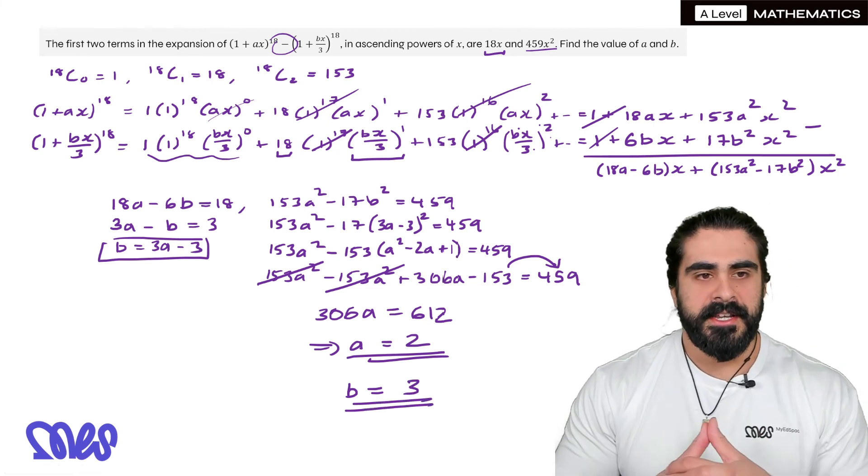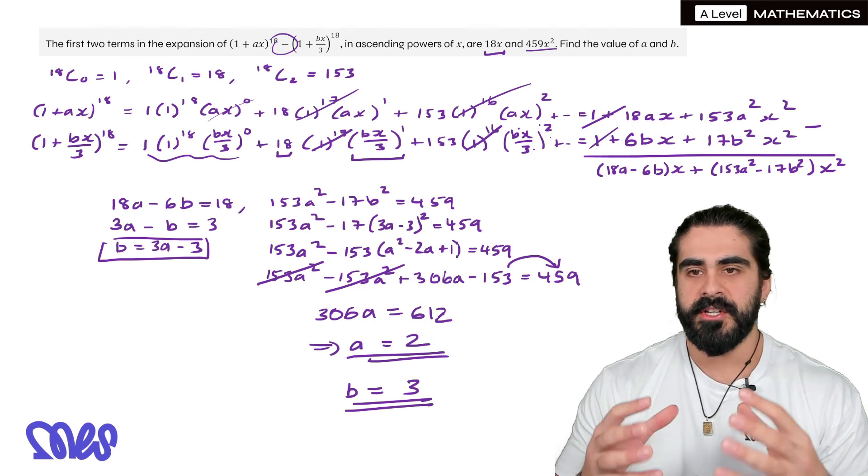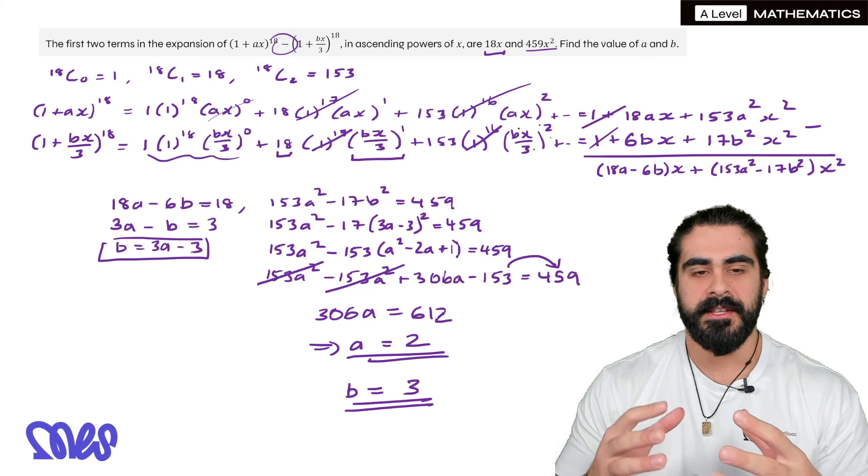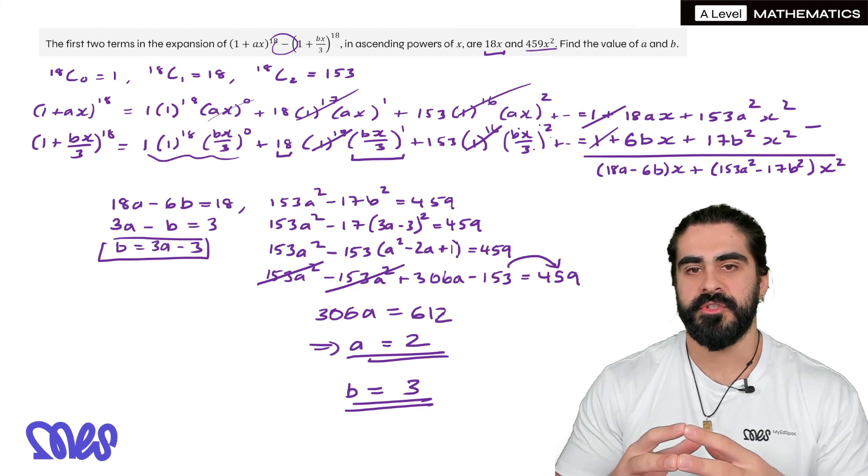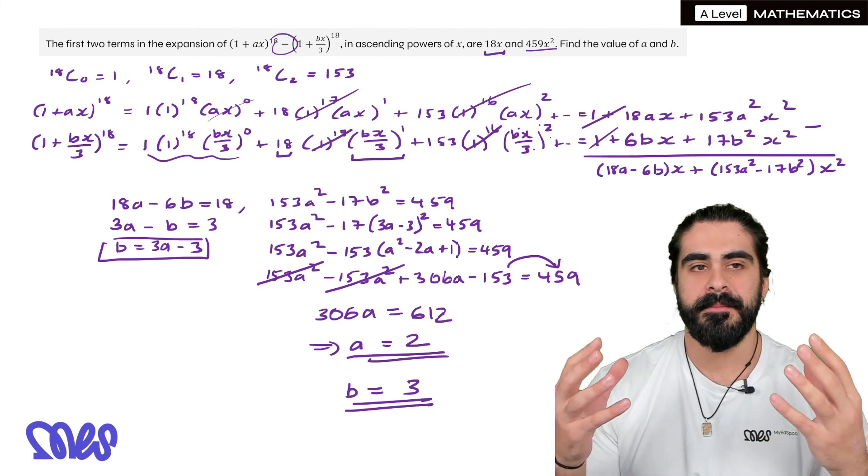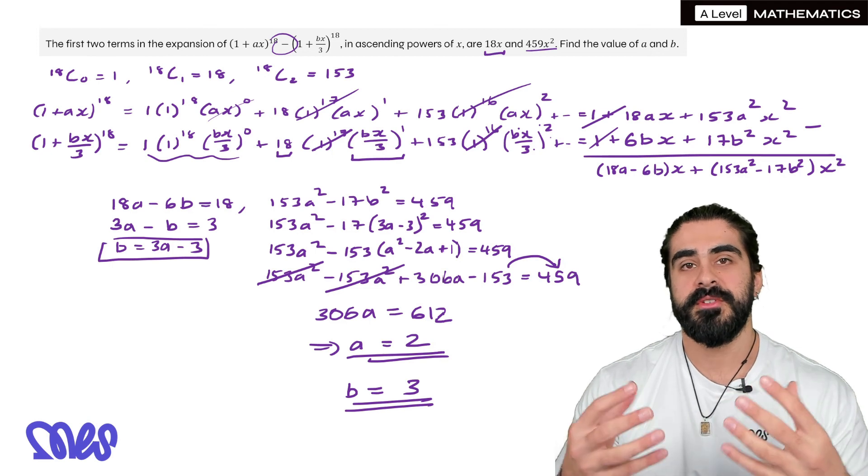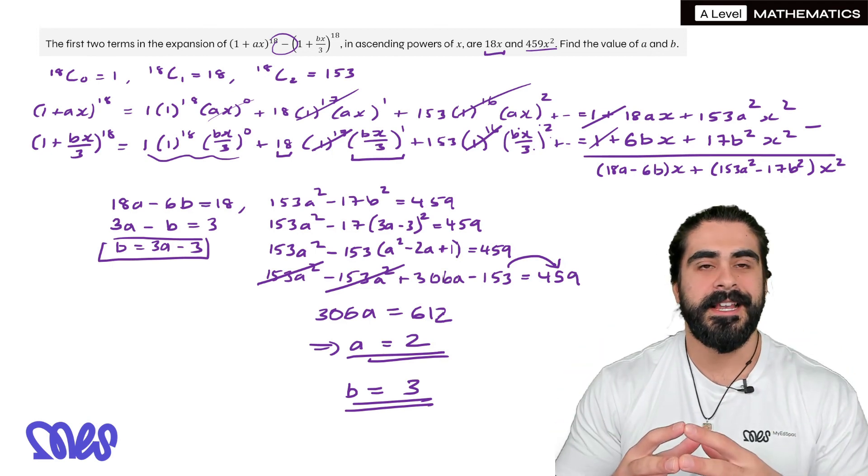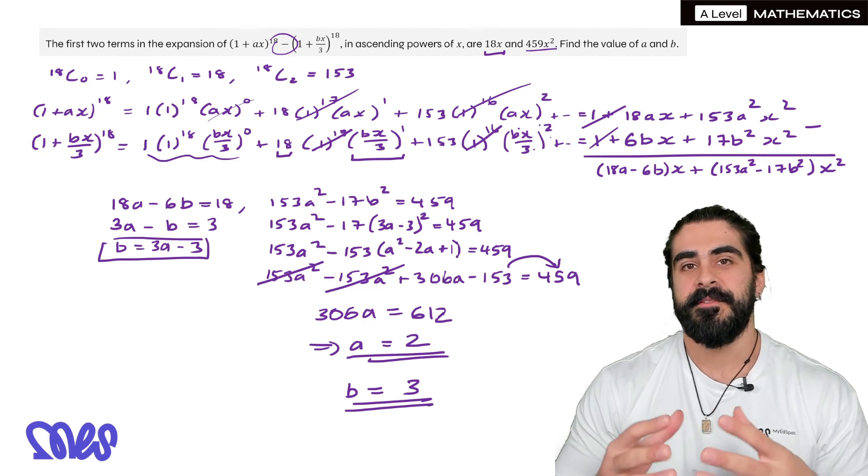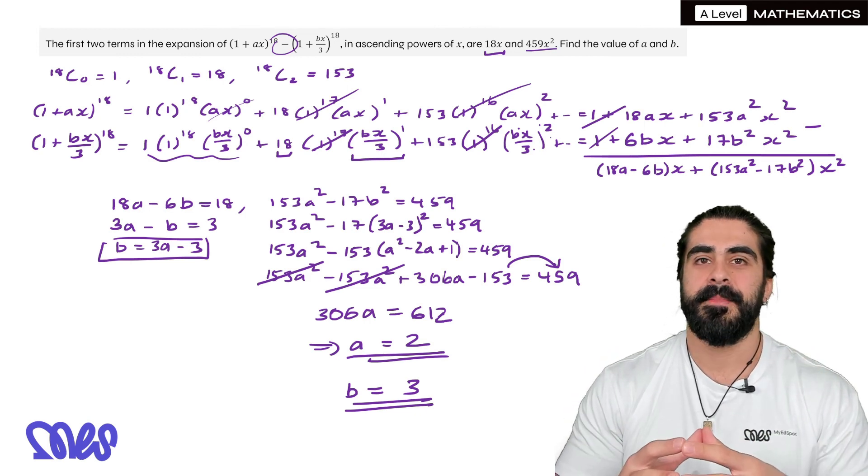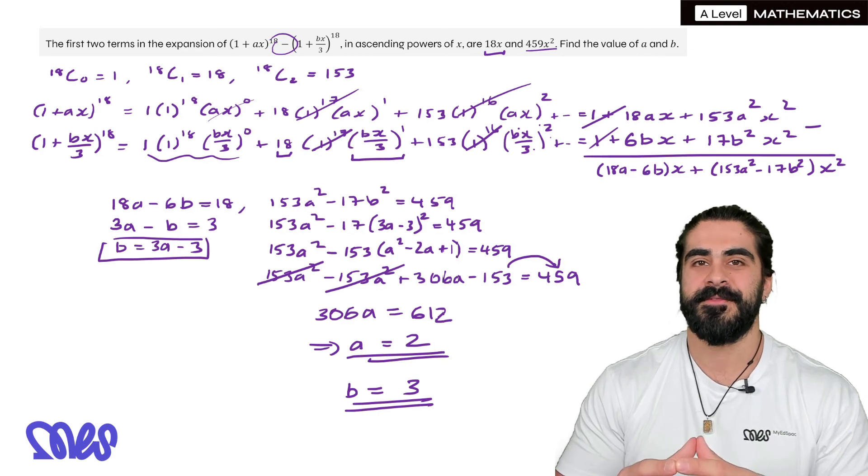So this would be regarded as a tougher AS binomial expansion question, just because it's quite technical with the a's and the b's. But in general, it's not that bad. It's just heavy on the algebra. So that's it, guys. That's the binomial expansion where the powers are integers. Stay tuned for the next set of lessons where I'm going to go through trigonometry. So you don't want to miss it. If you learned something, please hit that like button and subscribe if you want more math content. I'm going to see you guys in the next video. Peace.